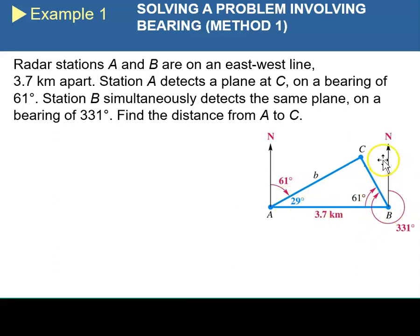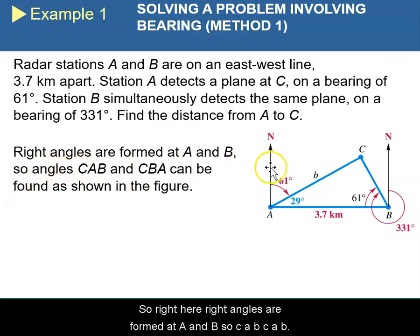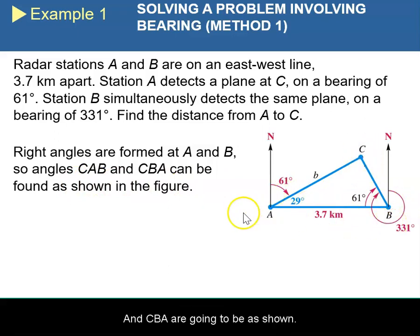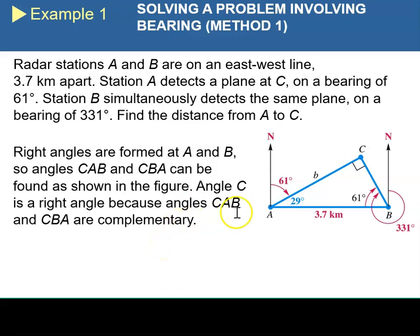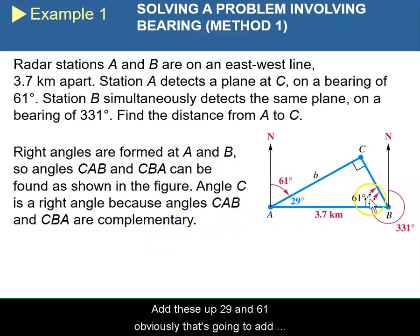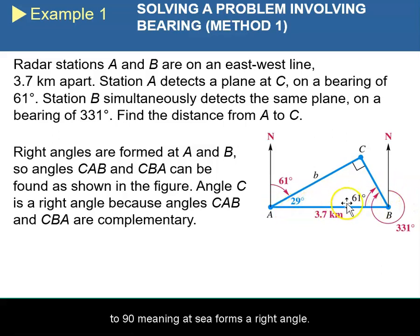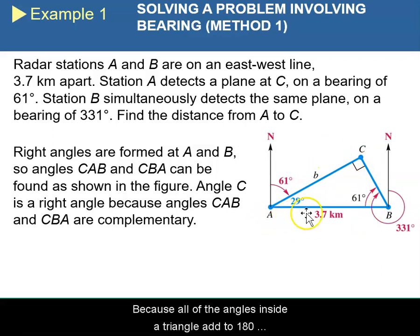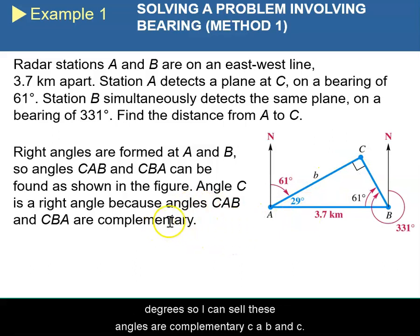We can also figure that out from our translational lines. Right angles are formed at A and B. So angles C-A-B and C-B-A are going to be as shown here. If you add 29 and 61 together, that obviously adds to 90, meaning that C forms a right angle because all of the angles inside the triangle have to add to 180 degrees. So these angles are complementary: C-A-B and C-B-A.